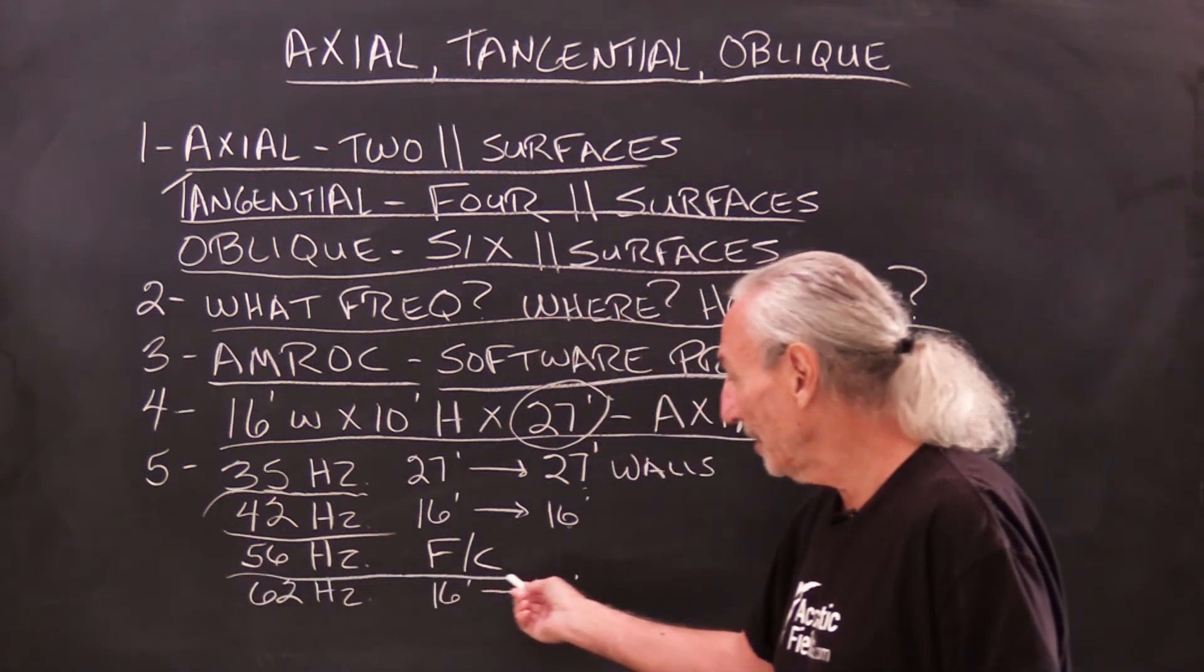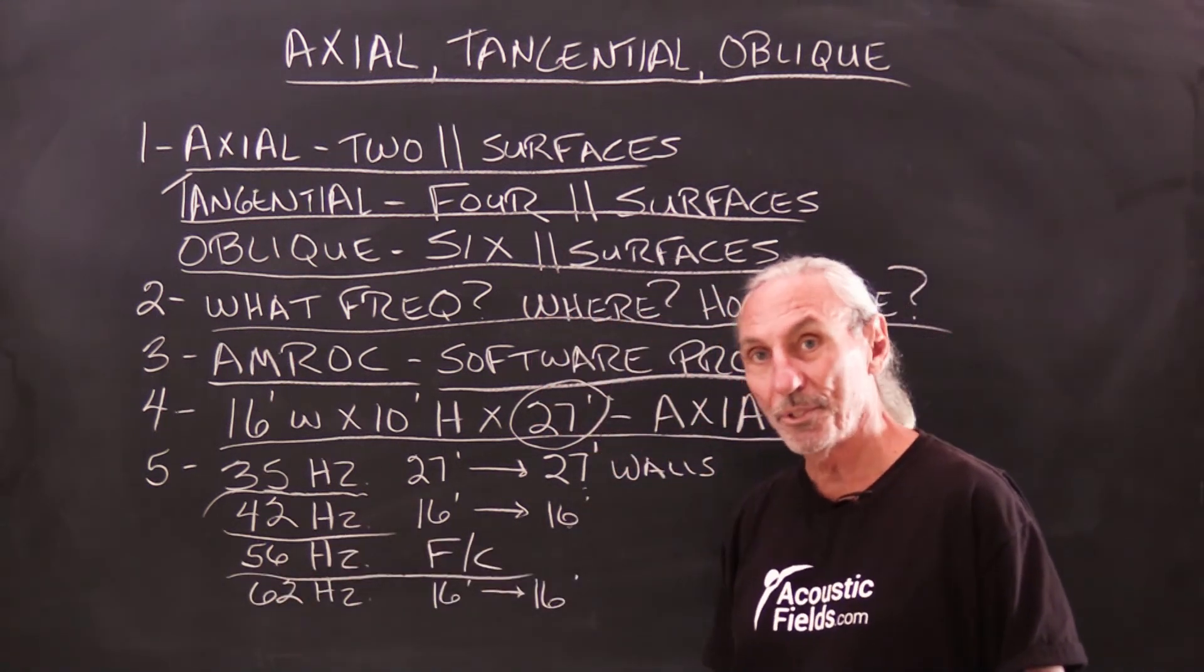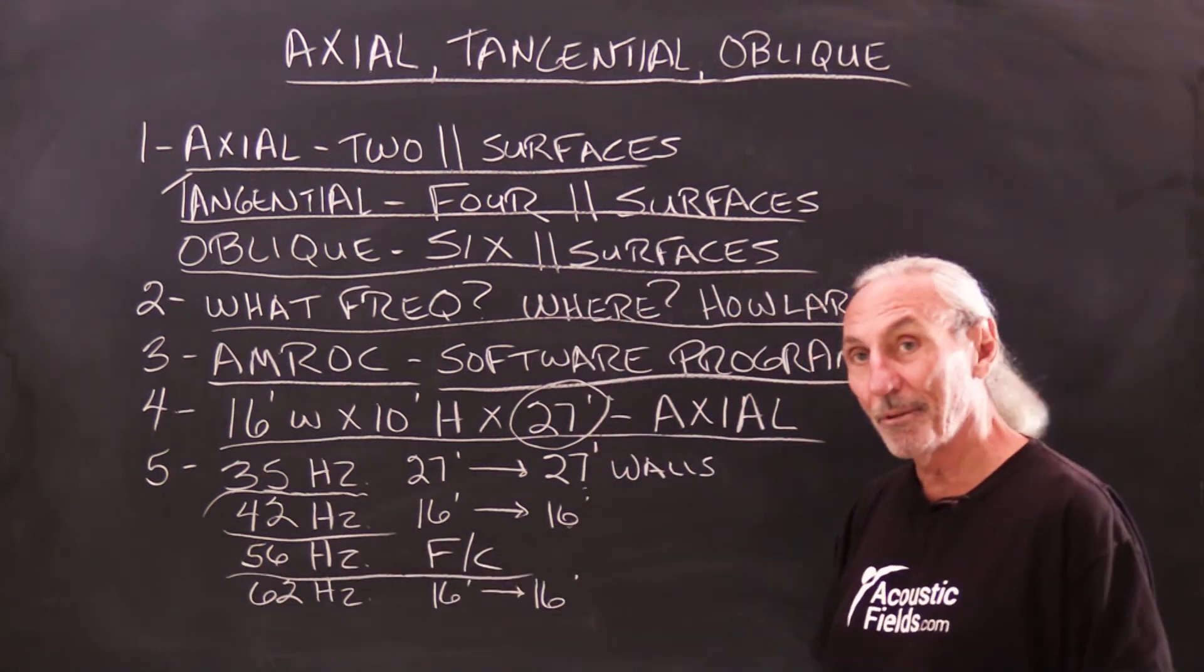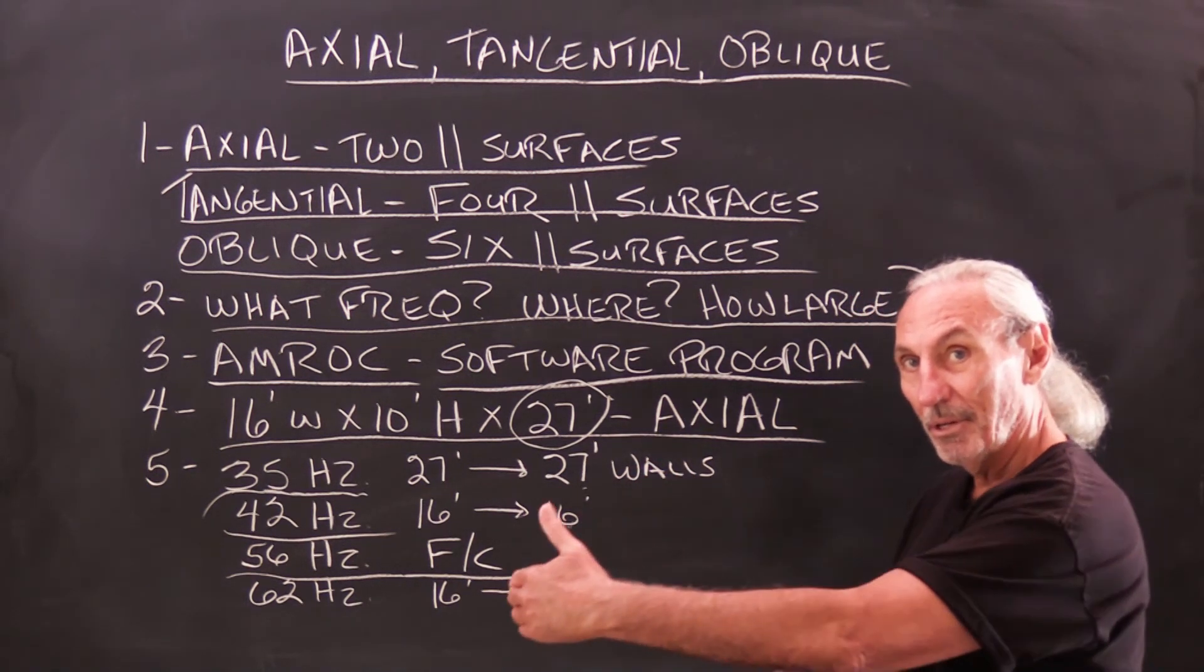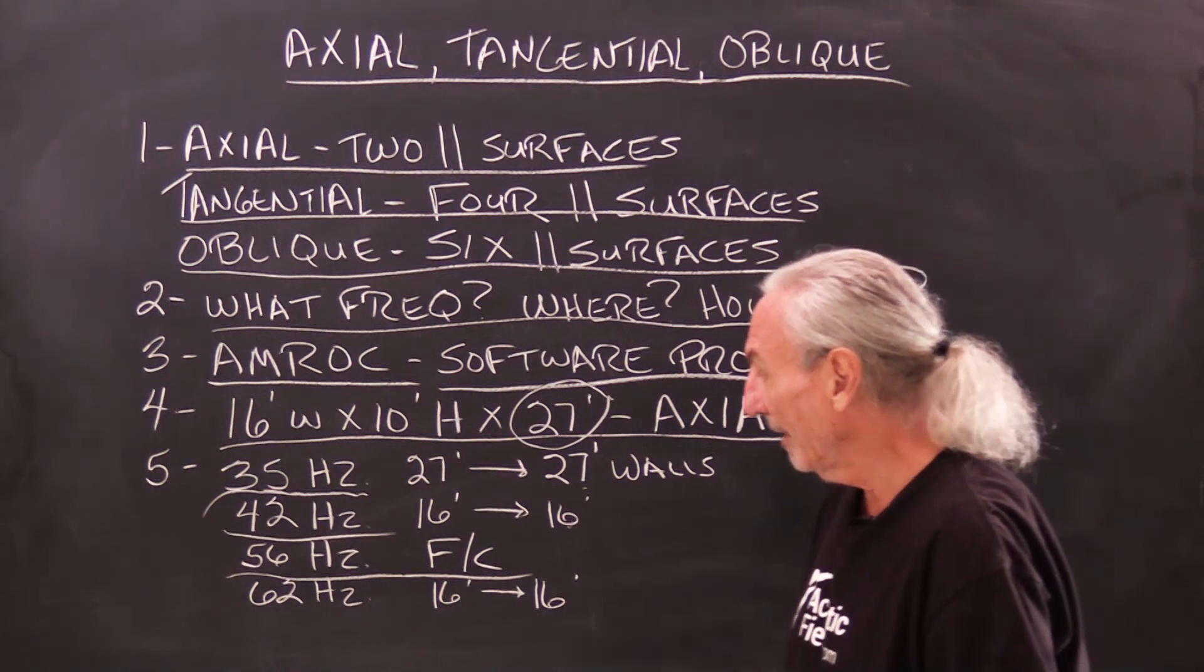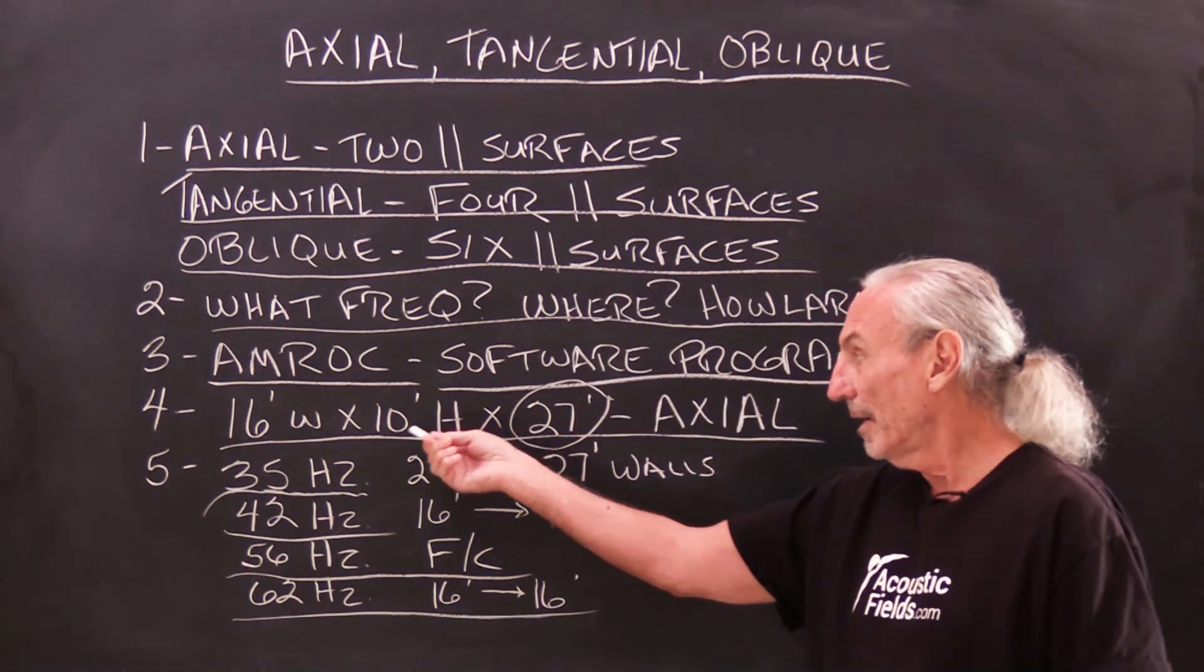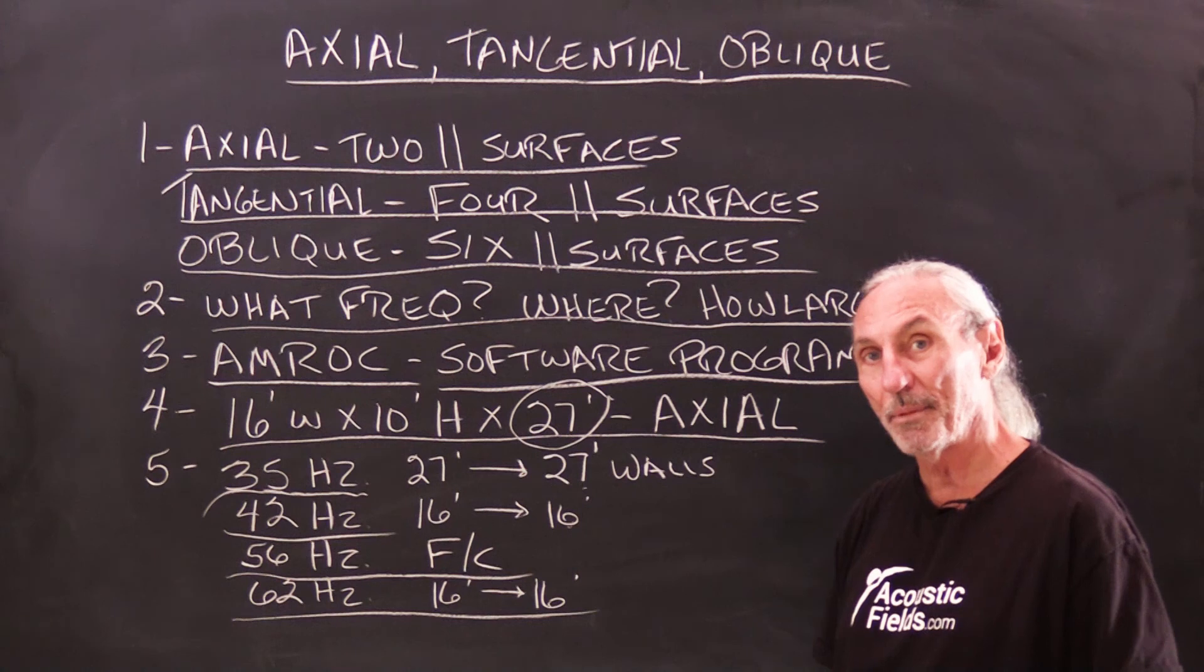And then look at here at 56 cycles, 14 Hertz away, we got a floor to ceiling issue. So we have floor to ceiling, sidewall to sidewall, front to rear. And then at 62 cycles, we're back to our width dimension again for problems.